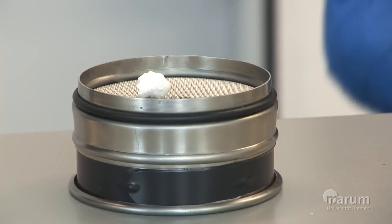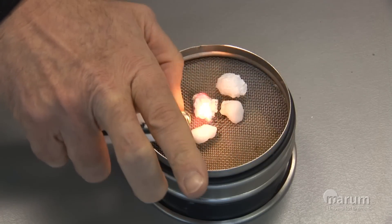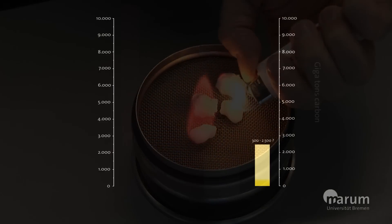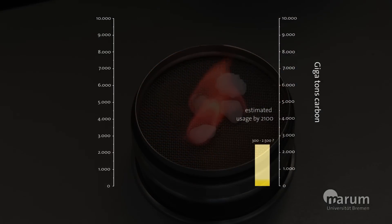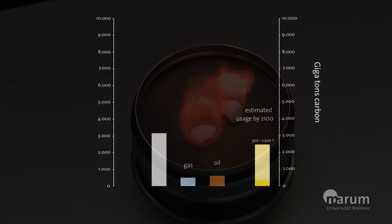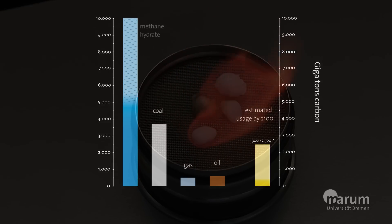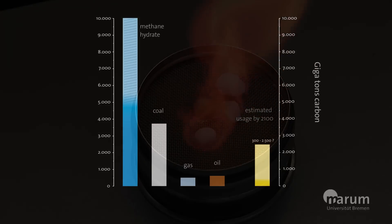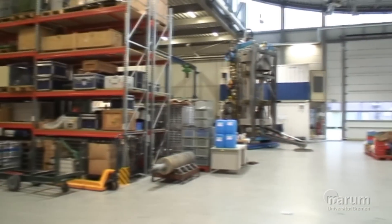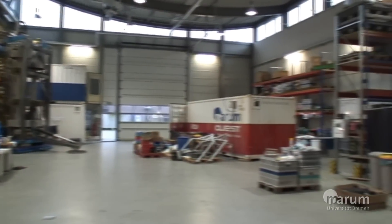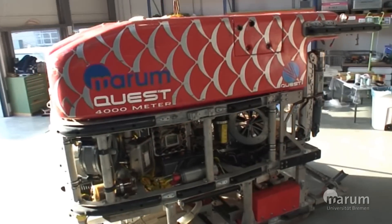Methane hydrates have received special attention because the energy stored in them may be used by people in the future. If we compare the amount of carbon stored in the form of oil, natural gas and coal with that in the form of methane hydrates buried under the sea floor, then we have to consider that methane hydrates could represent a possible energy source for the future. There are, however, a lot of other questions that will have to be answered before it is possible to commercially retrieve the methane hydrates.